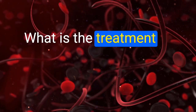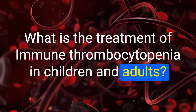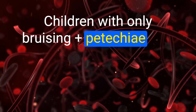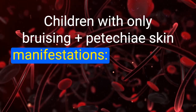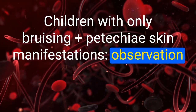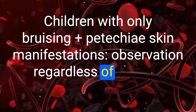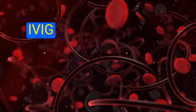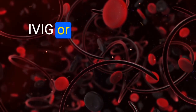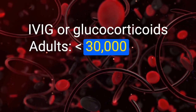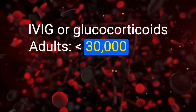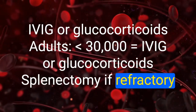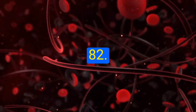What is the treatment of immune thrombocytopenia in children and adults? Children with only bruising and petechiae (skin manifestations): observation regardless of platelet count. Children who are bleeding: IVIG or glucocorticoids. Adults with platelet count less than 30,000: IVIG or glucocorticoids; splenectomy if refractory.